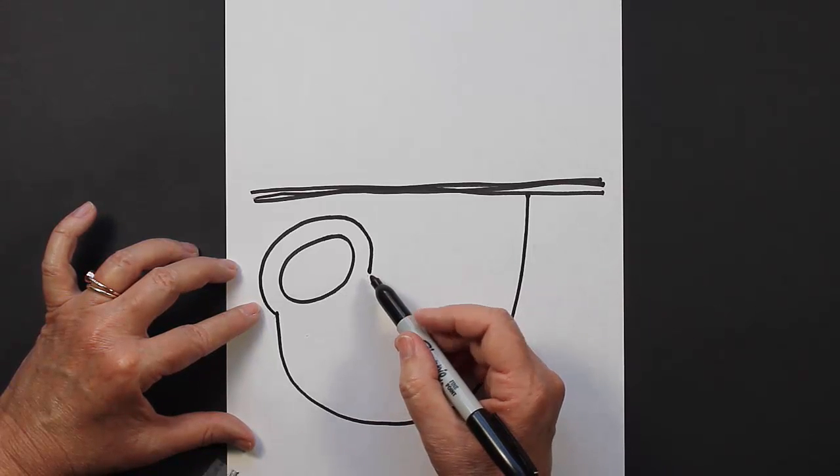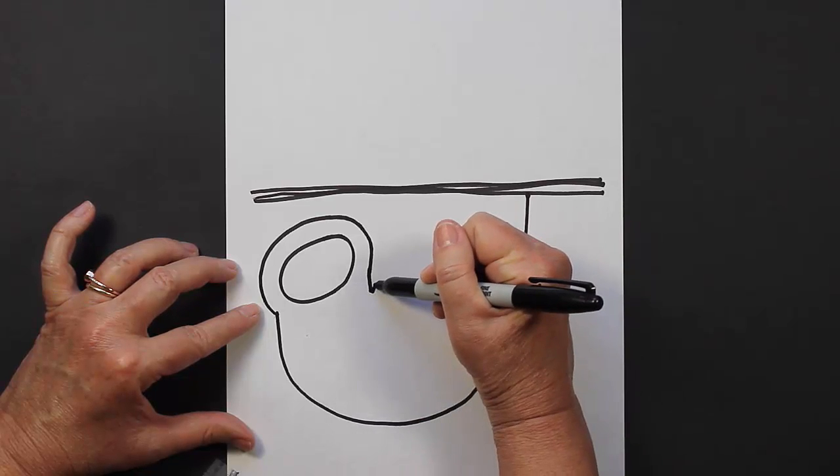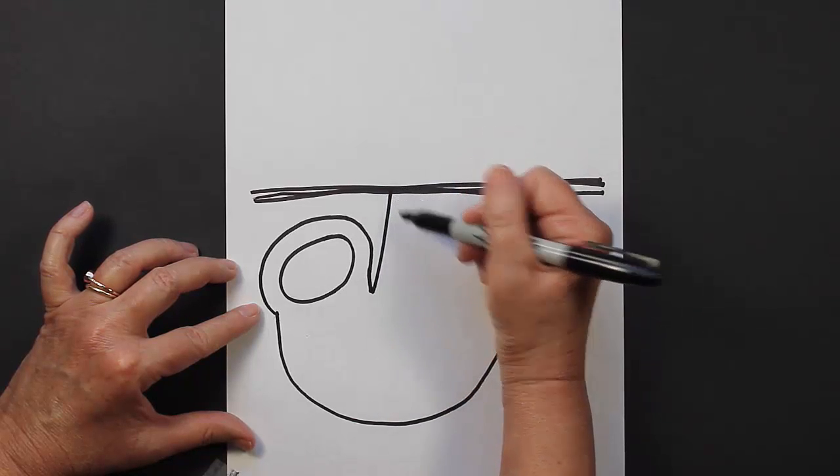Now what we're going to do from here is come down a little bit further and then we're going to go straight up. That's going to be the front arm of our sloth.